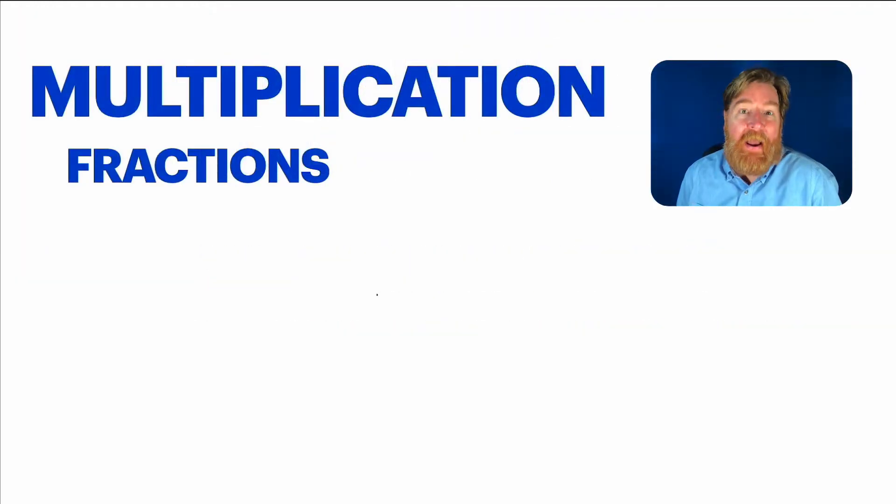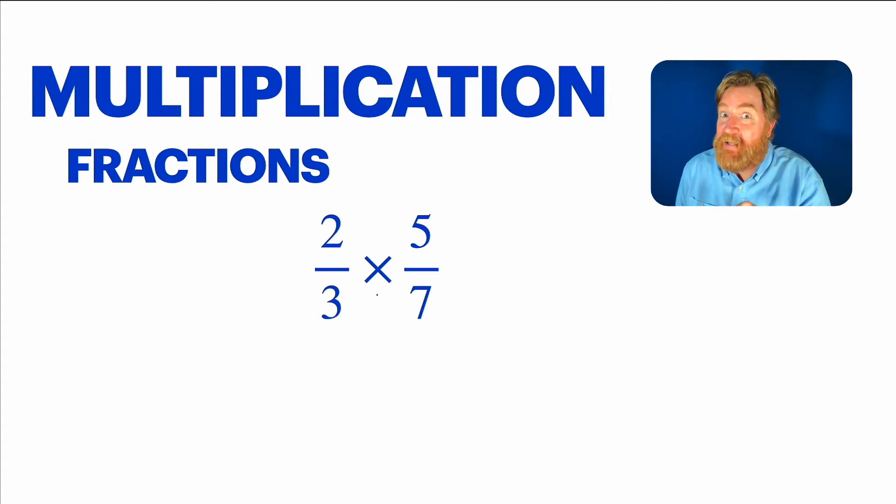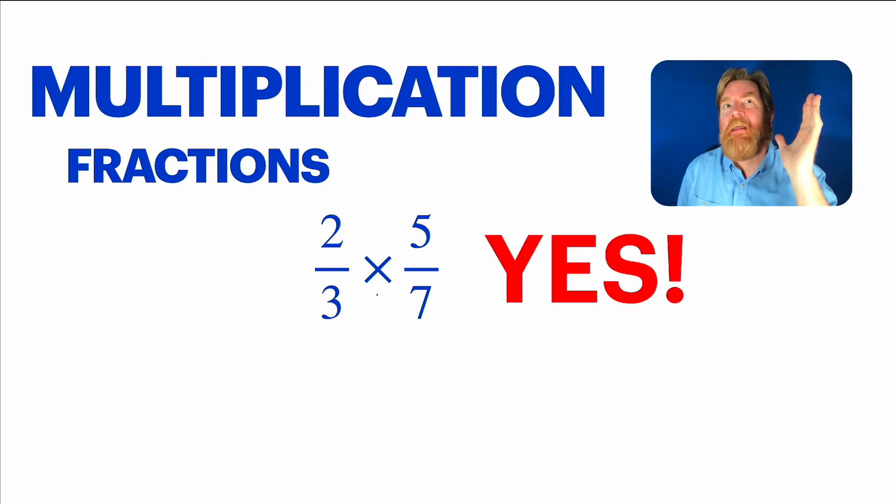Let's see how that works in practice. Let's take fractions, for example. If you have two thirds times five sevenths. Now, if this were addition, I want you to remember, you cannot add thirds and sevenths, right? They're not the same things. But this is multiplication. So can we add thirds and sevenths?